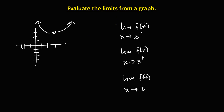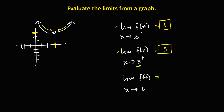As x approaches positive 3 from the left, the limit is equal to positive 3. For the limit as x approaches positive 3 from the right, the limit is also equal to positive 3. Since the left-side limit is equal to the right-side limit, the limit as x approaches positive 3 is equal to positive 3.